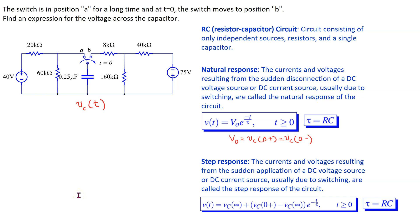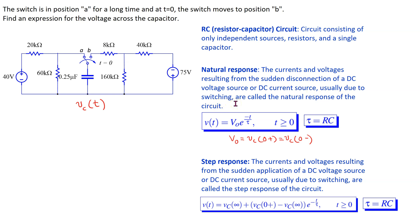In this video, we will look at how to find the voltage across a capacitor in a first-order RC circuit. Recall that a first-order RC circuit is defined as a circuit consisting of only independent sources, resistors, and a single capacitor. The voltage across the capacitor depends on whether we are solving for the natural response or the step response. The natural response is the currents and voltages resulting from the sudden disconnection of a DC voltage source or DC current source, usually due to switching.